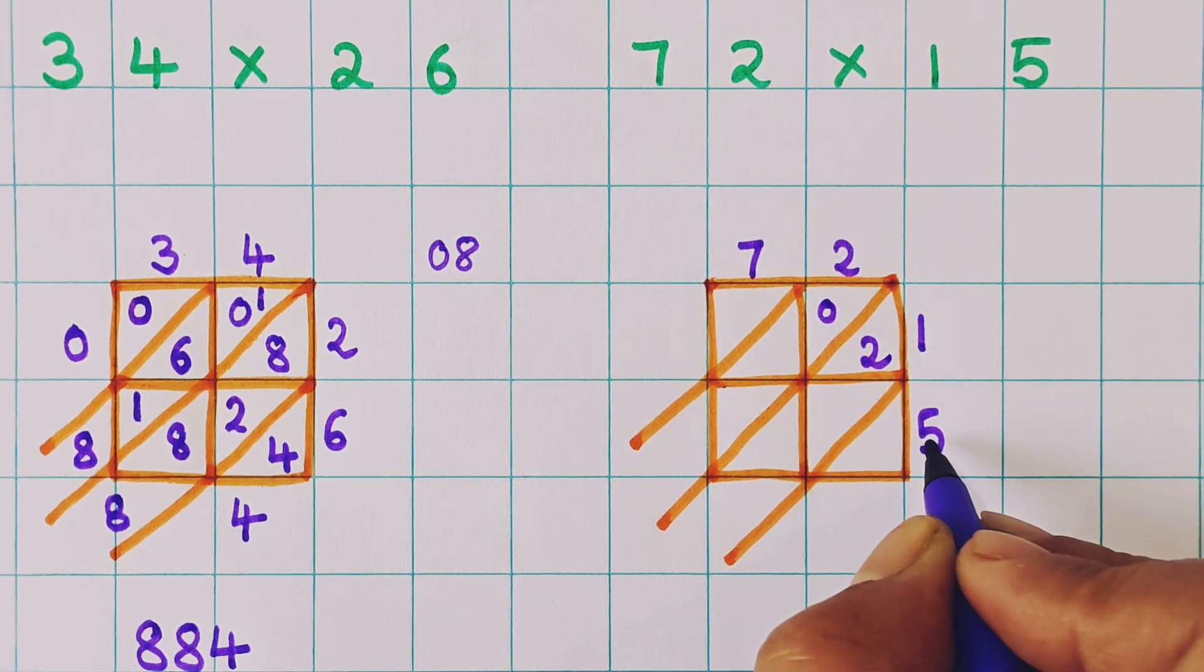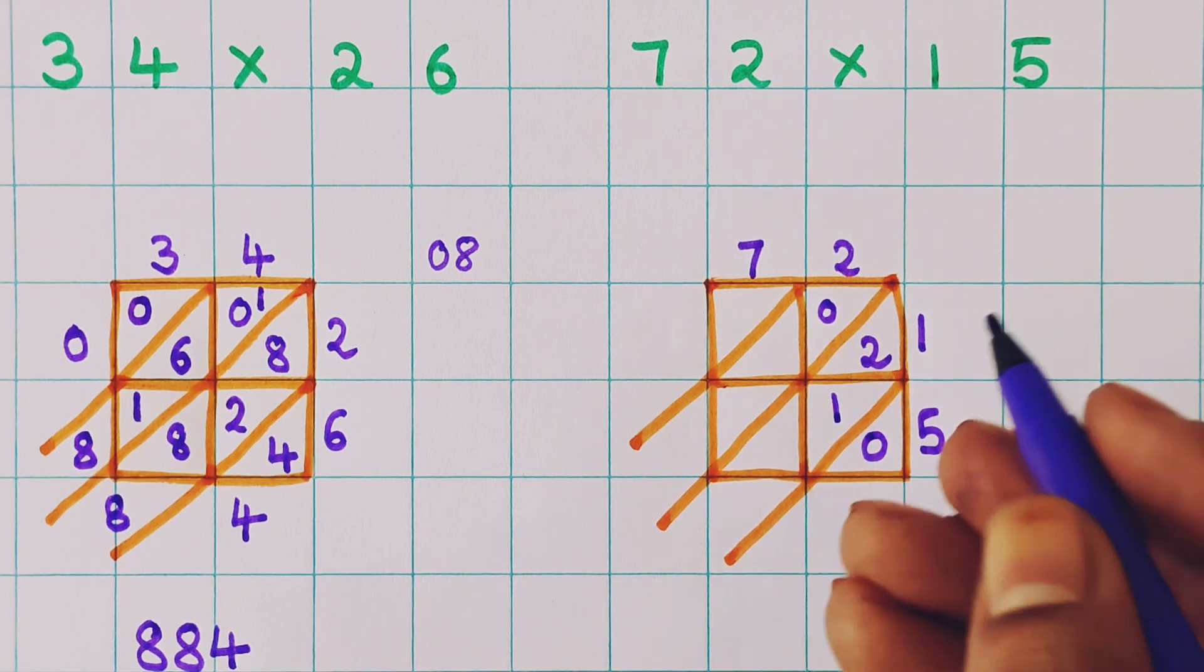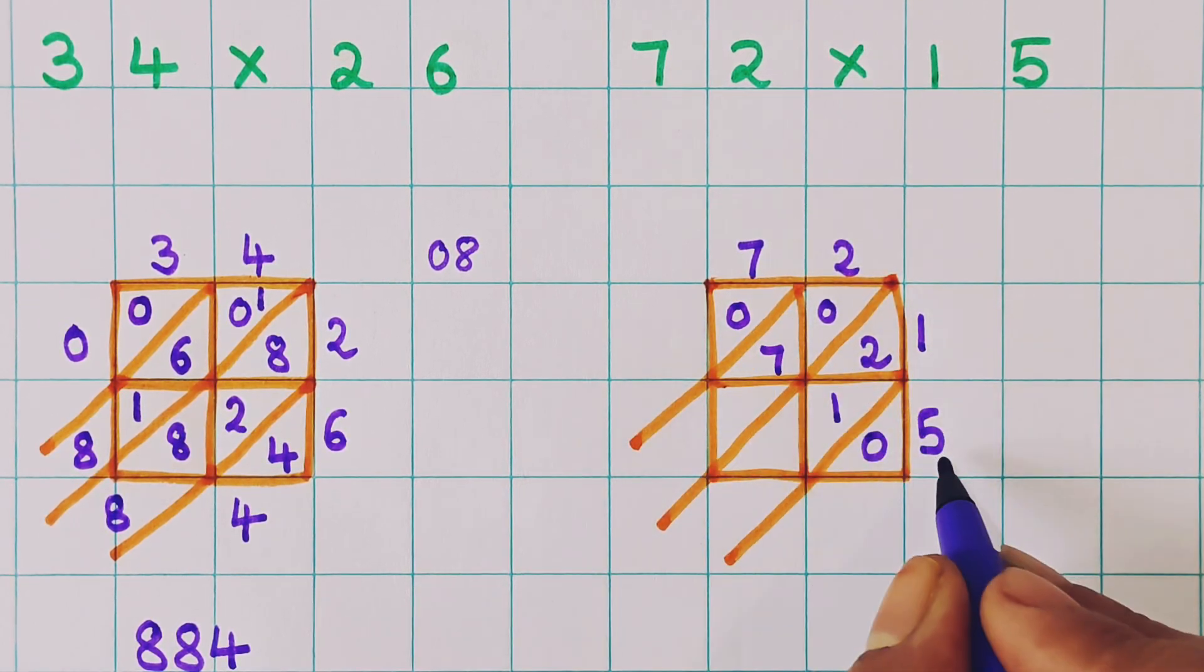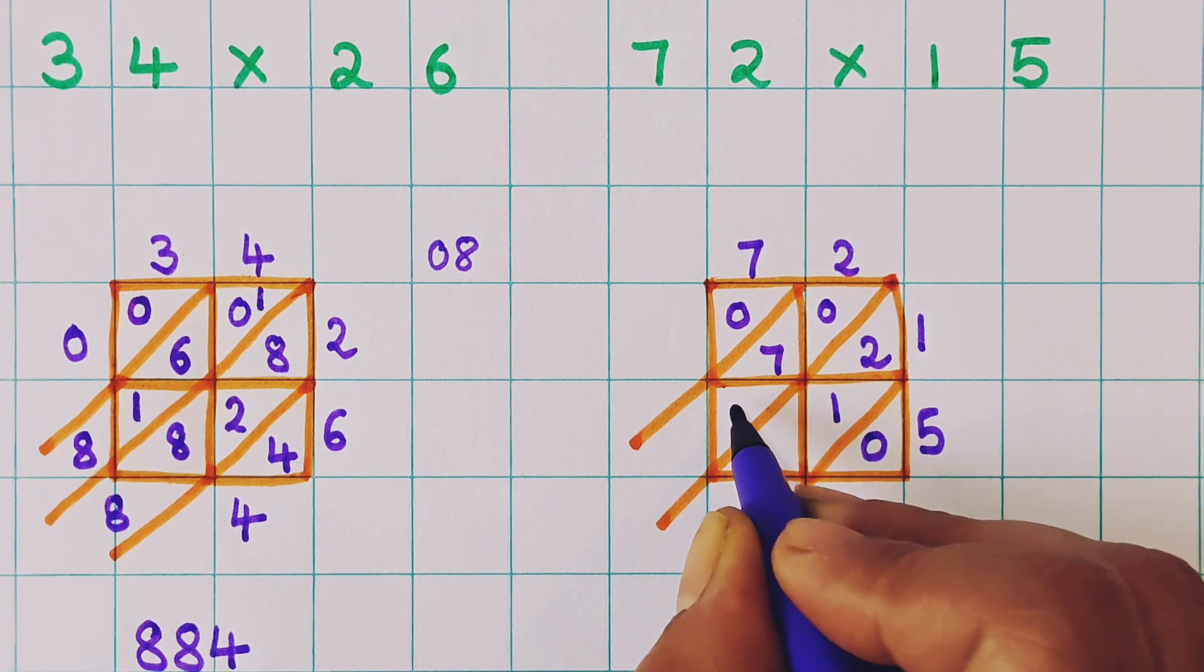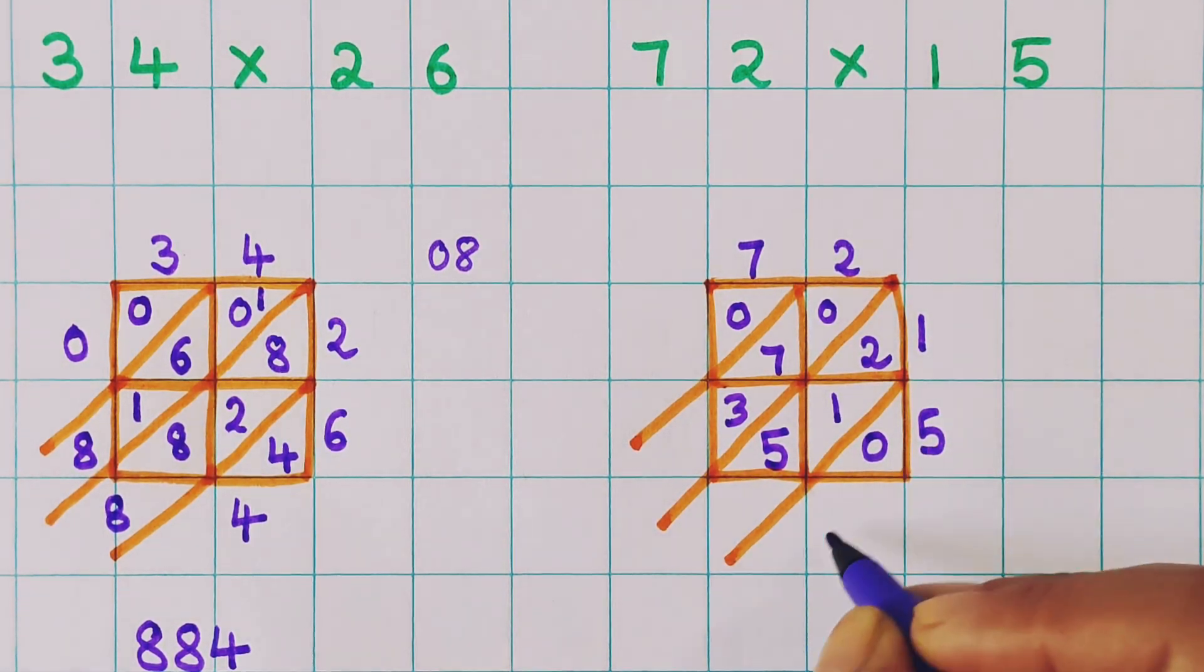Two fives are 10. So I will write 1, 0. Seven ones are 7. So 0, 7. Now seven fives are 35. So I will write 3, 5. Now let's do the addition.